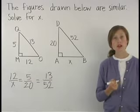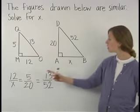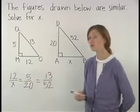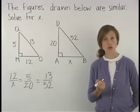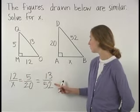Now, to solve for X, we need to set up a proportion. We can use the proportion 12 over X is equal to 5 over 20. It's important to understand that we could also use the proportion 12 over X is equal to 13 over 52.